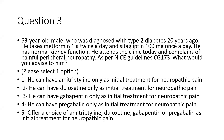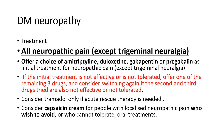With the latest NICE and ADA guideline updates, the correct answer is to offer the patient a choice of amitriptyline, duloxetine, gabapentin, or pregabalin as initial treatment for neuropathic pain — not a single mandated first-line agent. If the initial treatment is not effective or not tolerated, offer one of the remaining three drugs, and consider switching again if the second and third drugs also fail. Tramadol should only be considered if acute rescue therapy is needed.